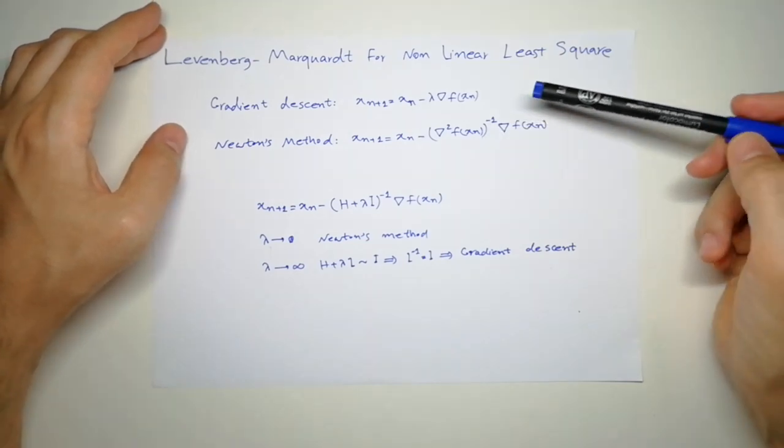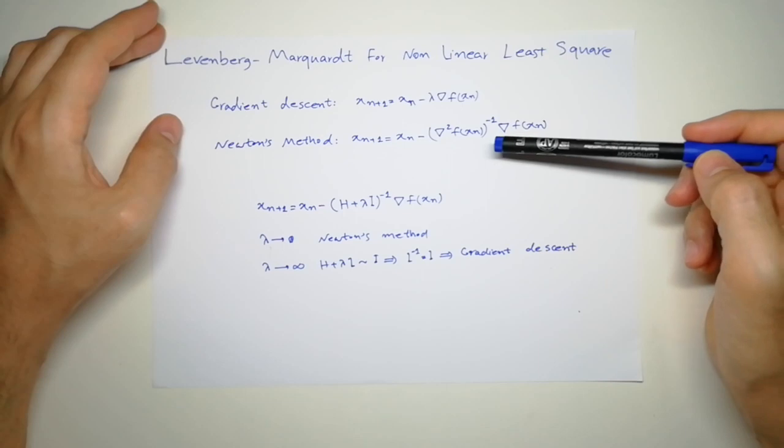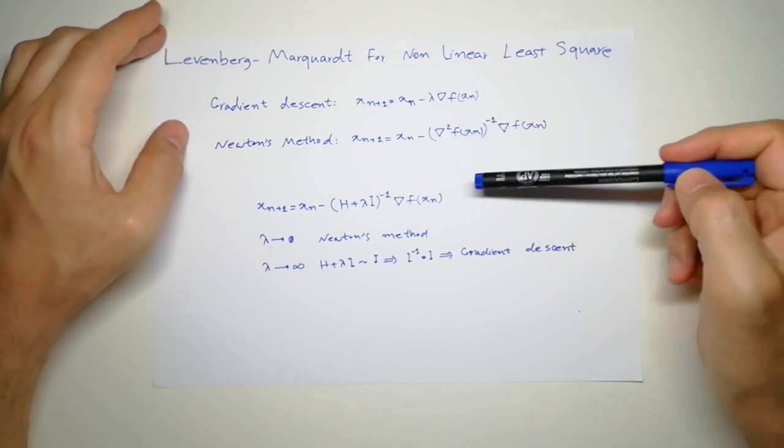If your data has more than one dimension, if x_n is from R^n space, this is going to be Hessian, this is going to be Jacobian.